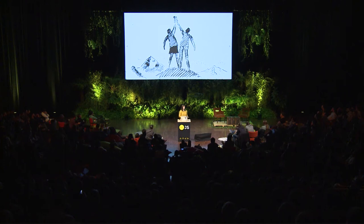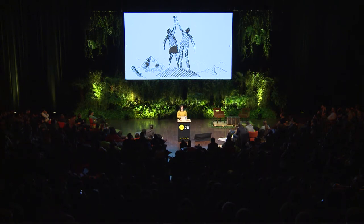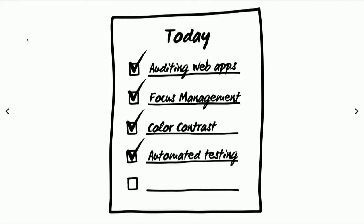My hope for this talk is to open the door to accessibility for many of you and make accessibility champions out of you. Today we're going to talk about accessibility debugging. I'll do a bit of live coding. We're going to focus on focus management — no pun intended — look at the number one fail in accessibility, which is color contrast, and then try to cement this in your workflow using automated testing.